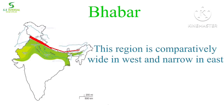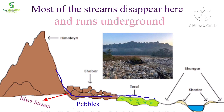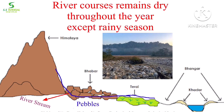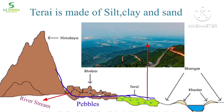The Bhabar region is comparatively wide in the west and narrow in the east. It has great porosity as it is made of pebbles. That's why most streams sink in this region, disappear, and run underground. River courses remain dry throughout the year in this region, except during the rainy season. All streams that disappear in the Bhabar region reappear in the Tarai region, which is made of comparatively fine-grained deposits like sand, silt, and clay.